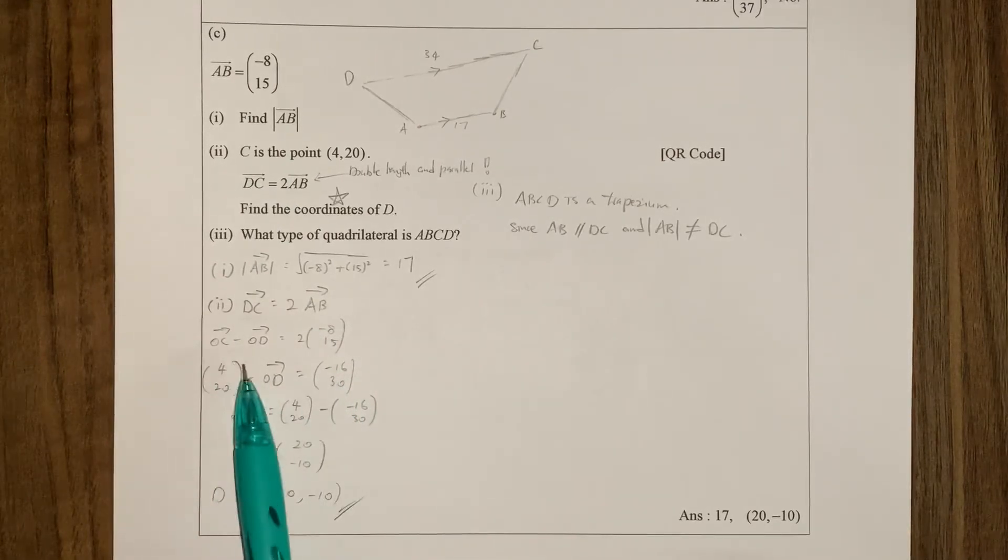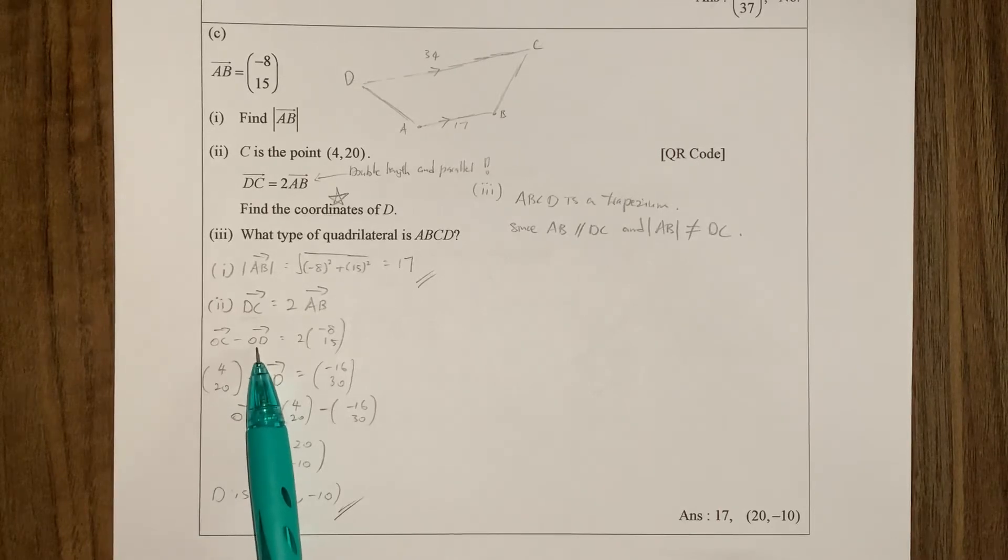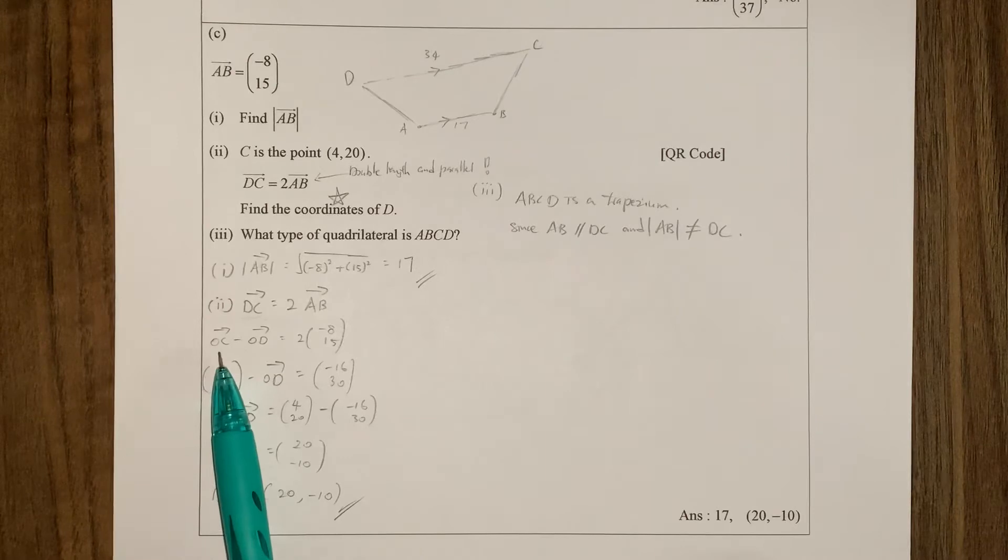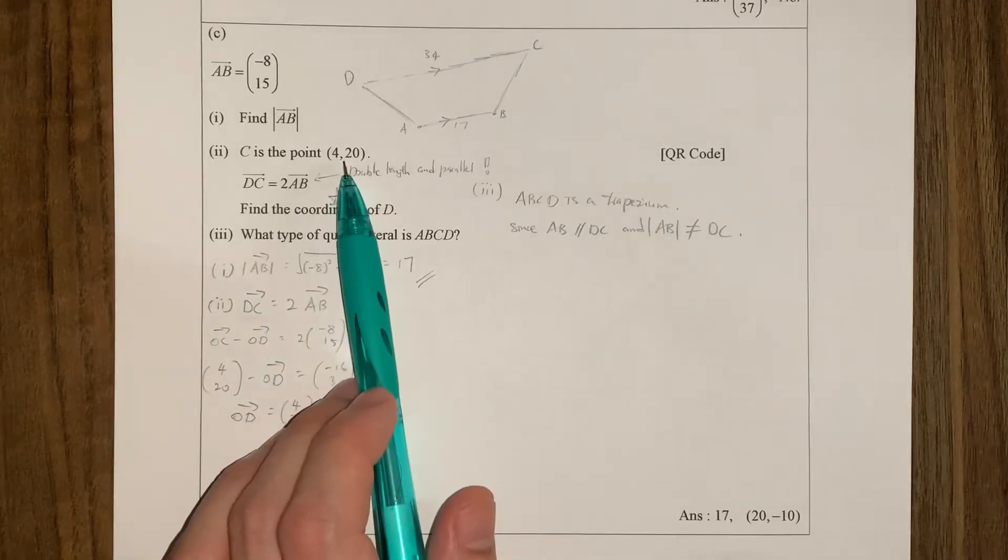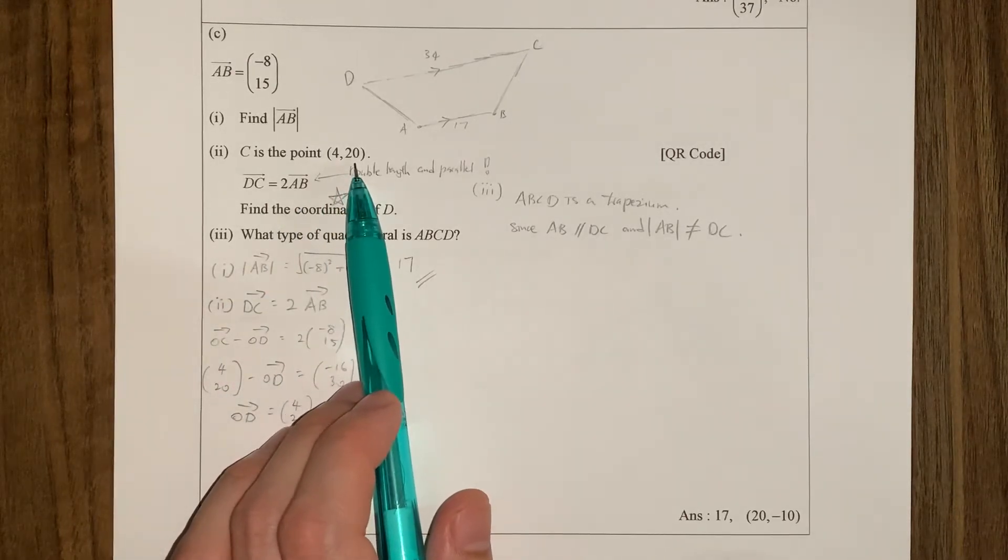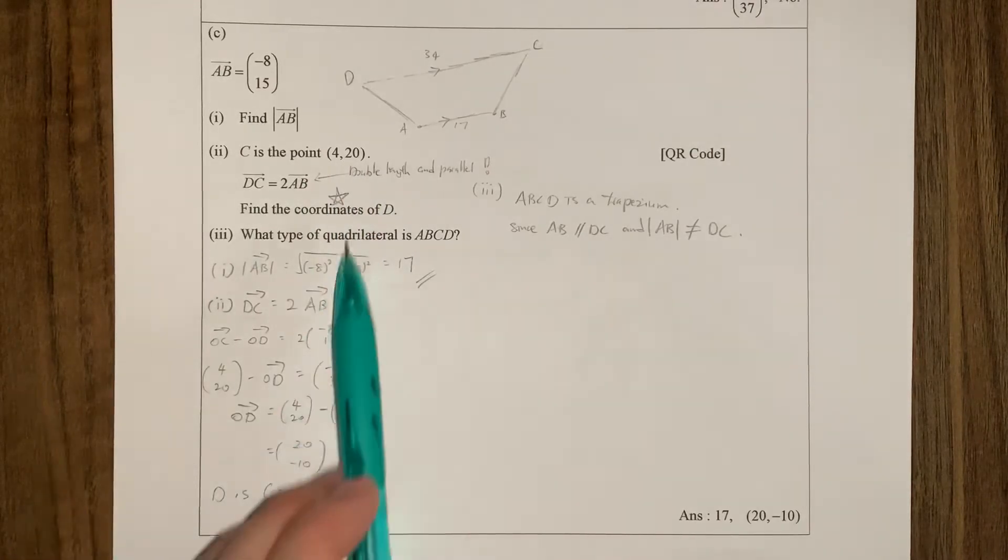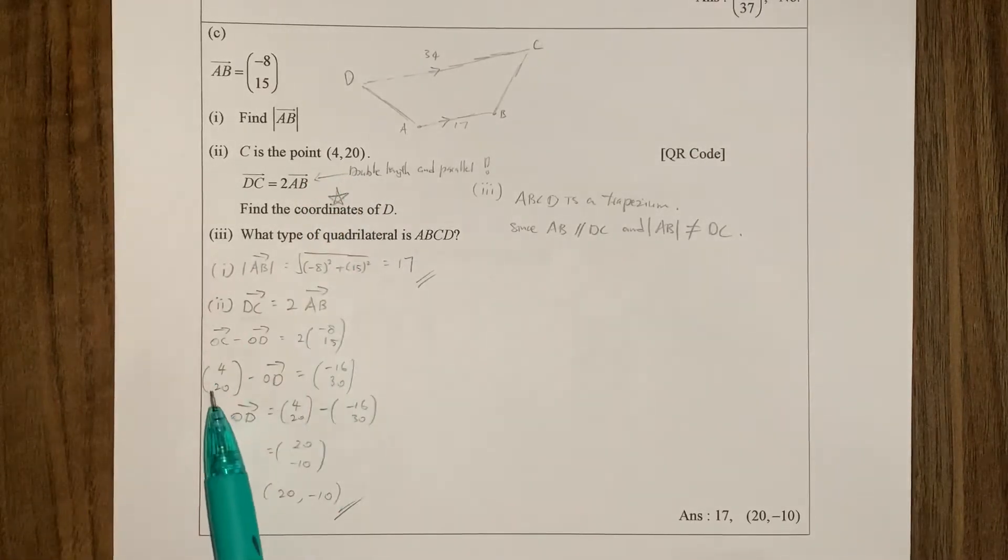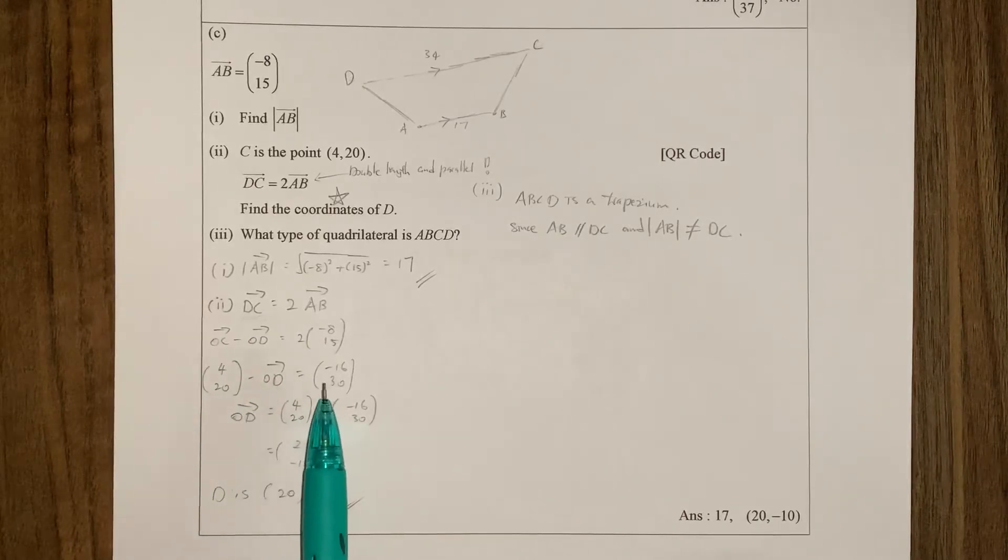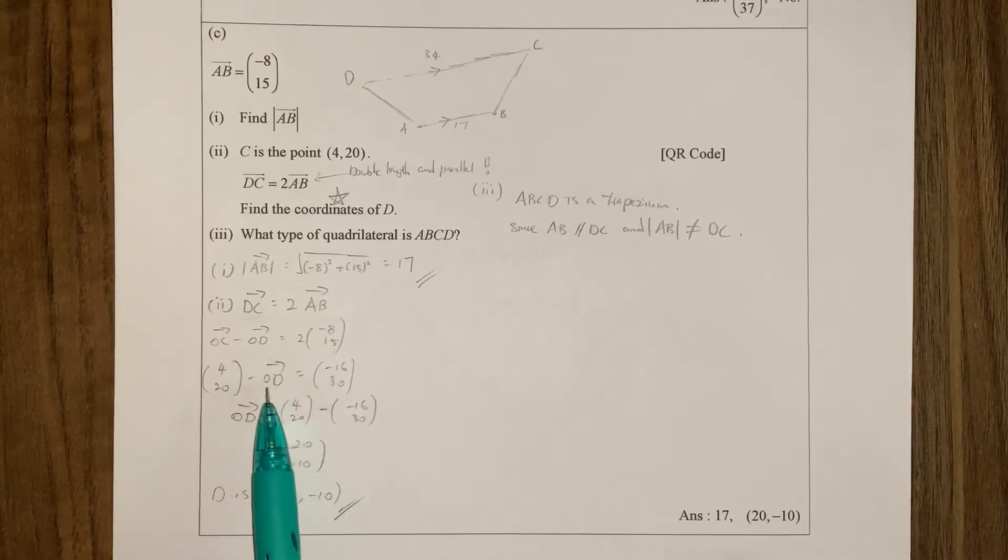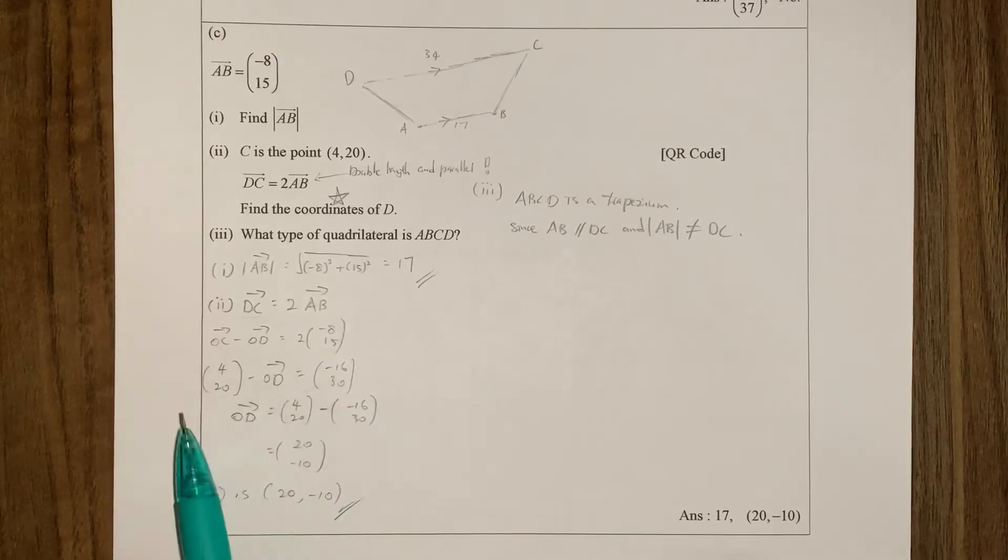So after that I simply make OD the subject because I'm interested in OD. And I realized actually OC also have. OC is here and they give you OC is 4,20. So in the world of position vectors, the coordinate is the vector. So that's why I put this 4,20 as a vector over here. OC, 4,20 minus OD equal to this. I times 2 already. I times in the 2. I get this. So I literally just make this subject. This one goes to the right and go to the left. Done. So this is my OD.